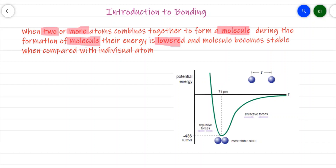The formation of a molecule is shown here with a graphical representation for the formation of the hydrogen molecule. When two hydrogen atoms are far away from each other, there is no force of attraction present. As a result, the potential energy is considered as zero. But when the two atoms come closer, attractive forces start developing, which indicates the potential energy of the system gets lowered.